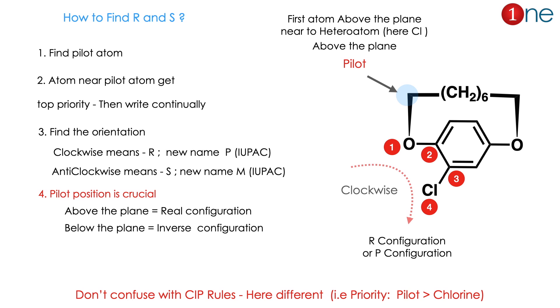If it is clockwise, the name is R (or B). If it is anti-clockwise, the name is S (or M). The pilot position is crucial: if it is above the plane, it is the real configuration; if it is below the plane, it is the inverse configuration.